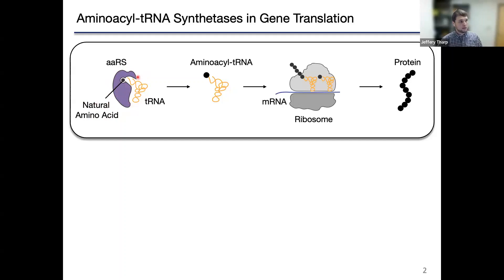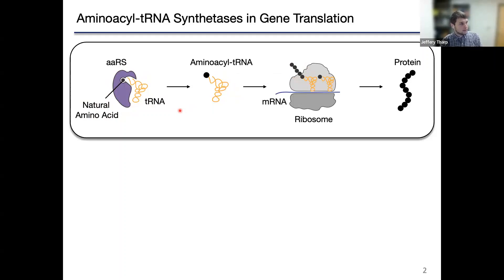This is a critical checkpoint in protein synthesis. Once formed, the aminoacyl tRNA migrates to the ribosome, where it introduces the amino acid into a newly synthesizing protein chain. Most life on Earth synthesizes proteins using just 20 different amino acid building blocks, and because of this, most organisms only encode 20 unique aminoacyl tRNA synthetase enzymes.